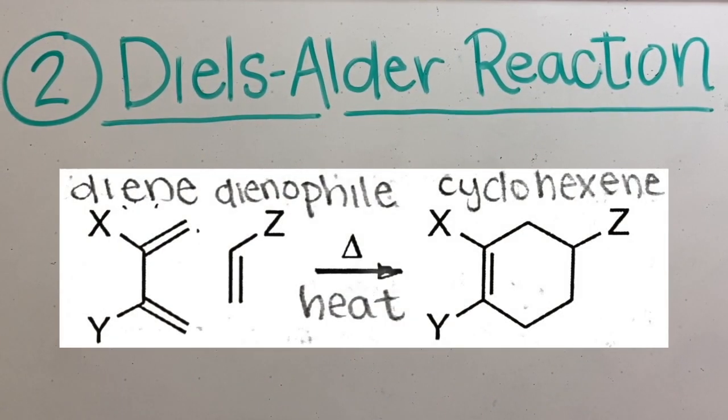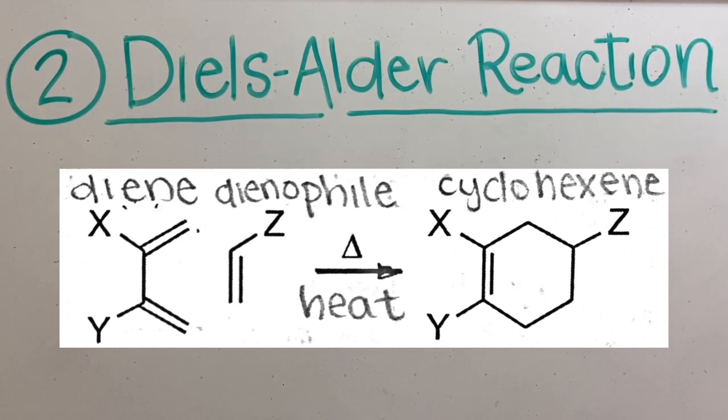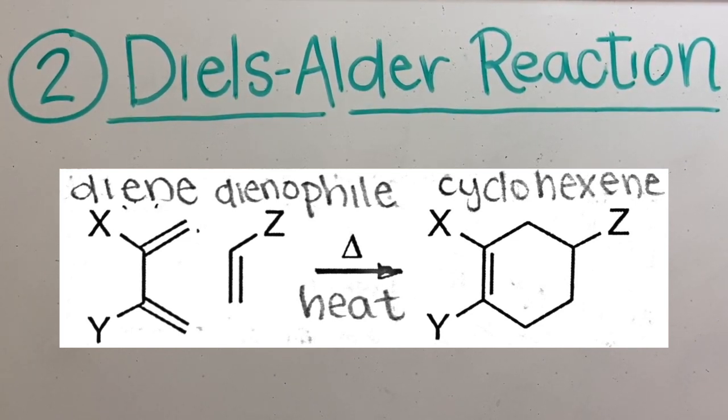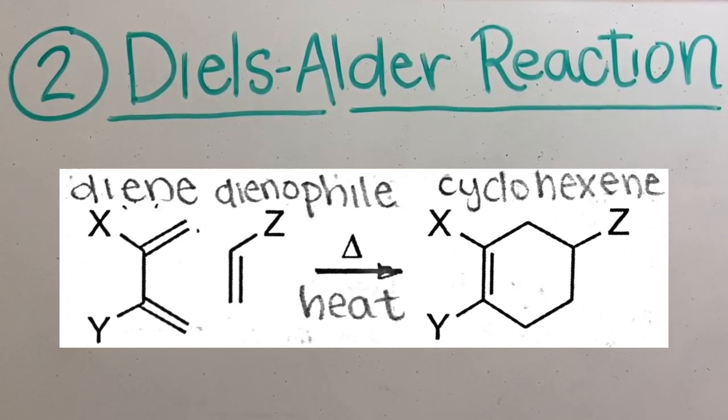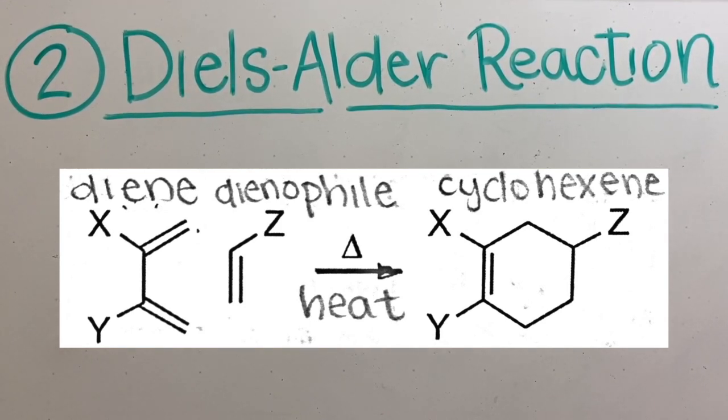Next is the Diels-Alder reaction, a 4 plus 2 cycloaddition that we learned in class. As you can see, a conjugated diene and dienophile will react in order to form a cyclohexene.